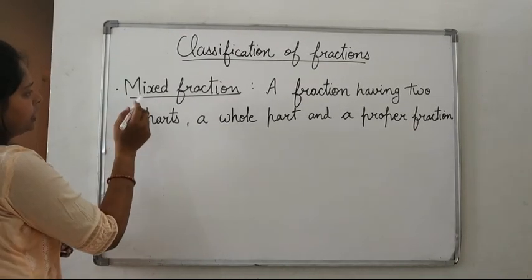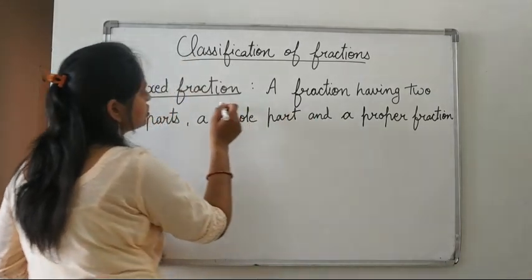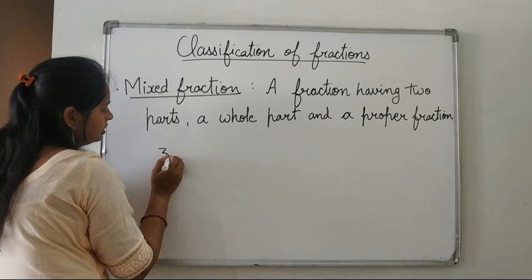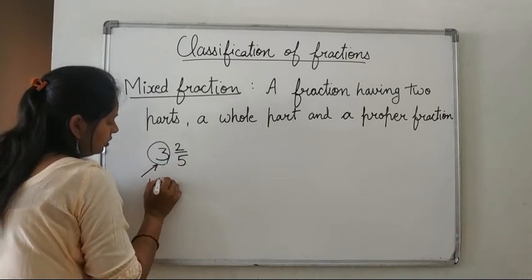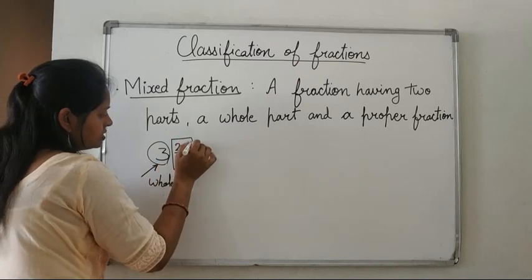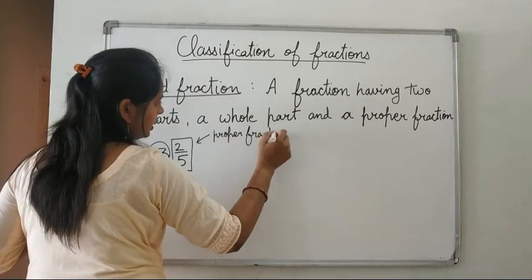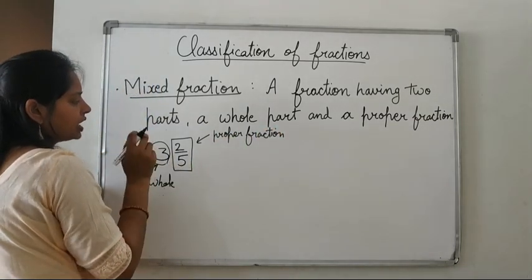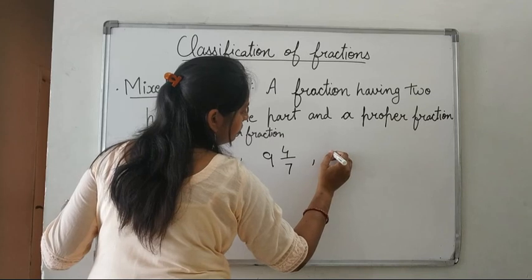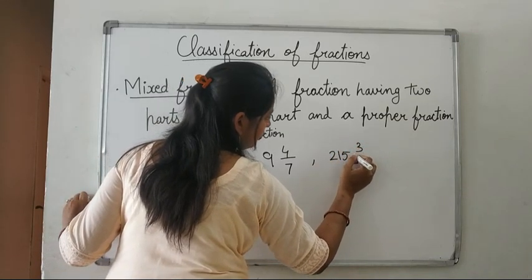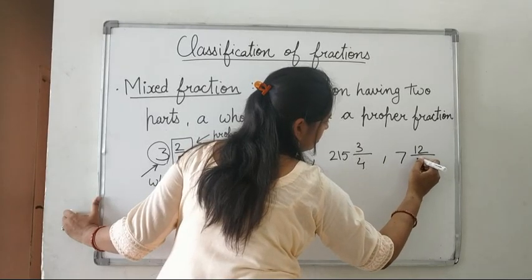Next is a mixed fraction — a fraction having two parts: a whole part and a proper fraction. For example, 3 and 2 upon 5, where 3 is the whole part and 2 upon 5 is the proper fraction. Other examples are 9 and 4 upon 7, and 7 and 12 upon 19.